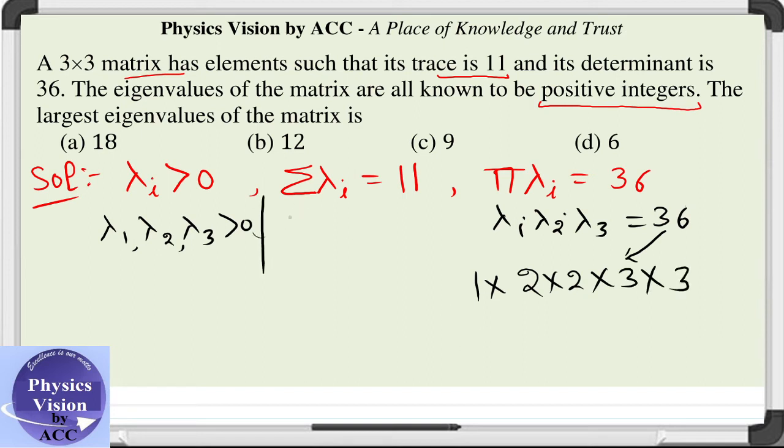And also we will make use of this condition that lambda 1 plus lambda 2 plus lambda 3 is equal to 11.